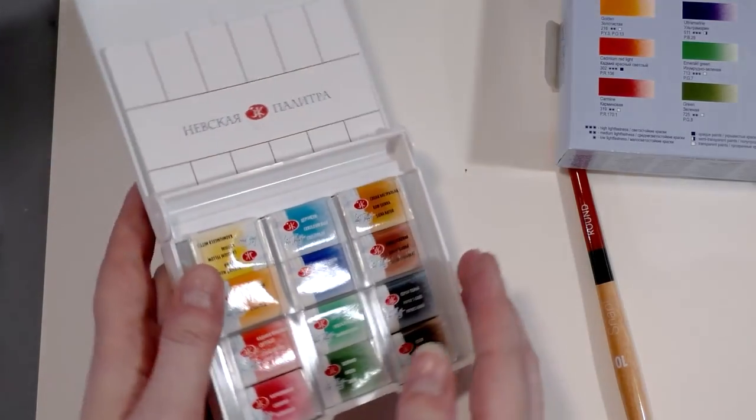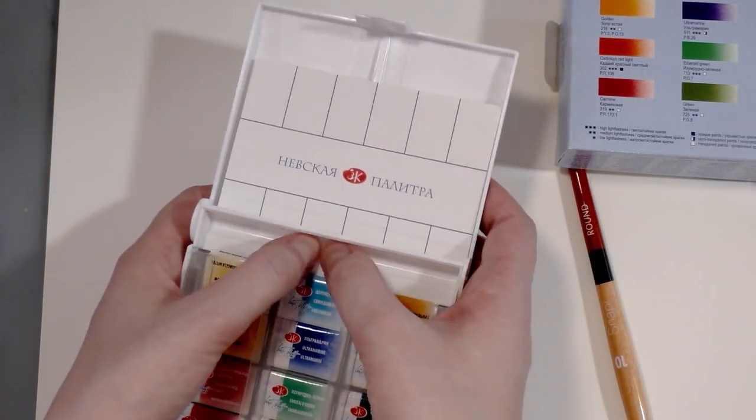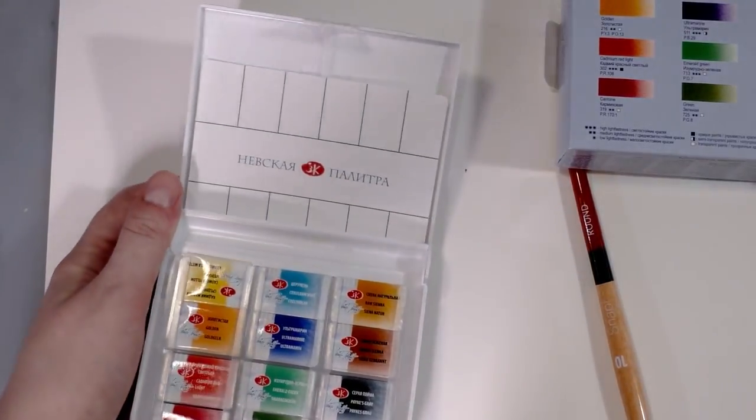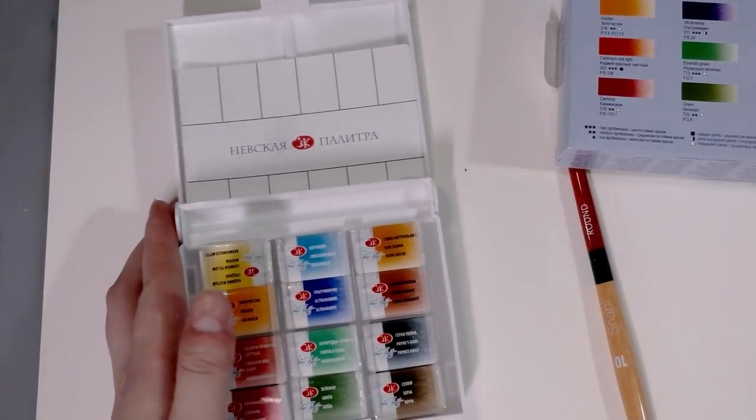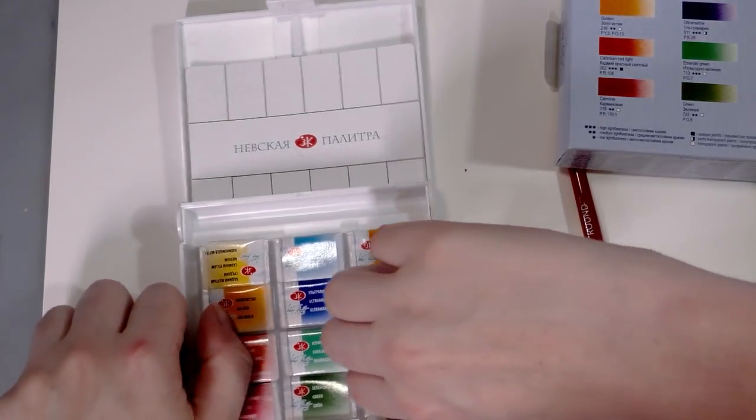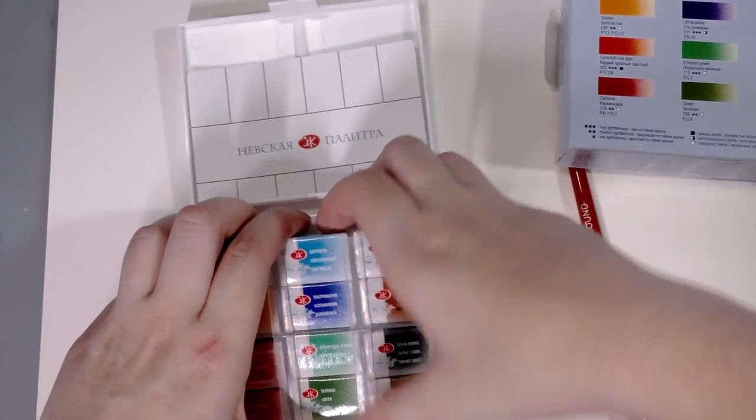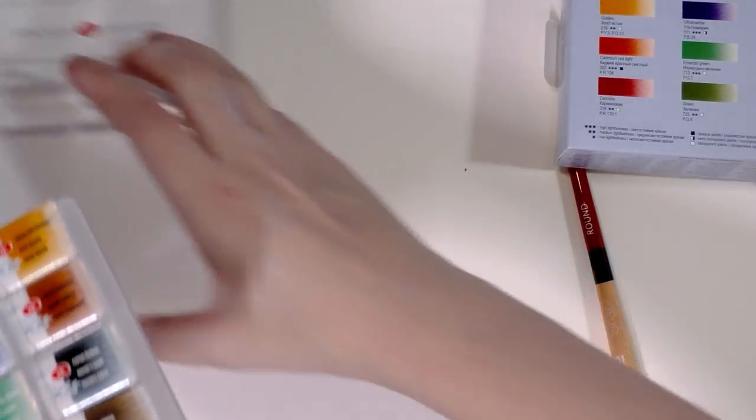There's also a space up here for a travel brush. And it looks like it would be large enough for one of the Koi travel brushes. So I'm going to slip this out again and we're going to start unwrapping.